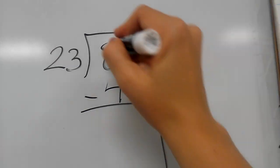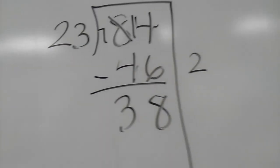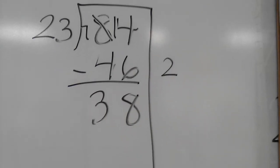Subtract. 4 minus 6, I would need to regroup. 8. 7 minus 4 is 3. So at this point, I know that I can't do another two groups of 23, but I could do 23 times 1.